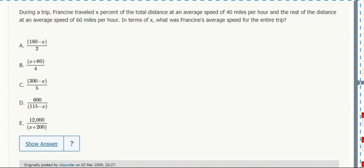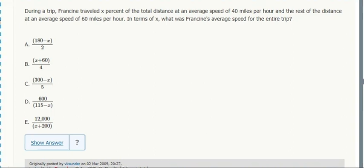Classic Official Guide distance problem with average speed. Total distance over total time for average speed, always. Total distance over total time.